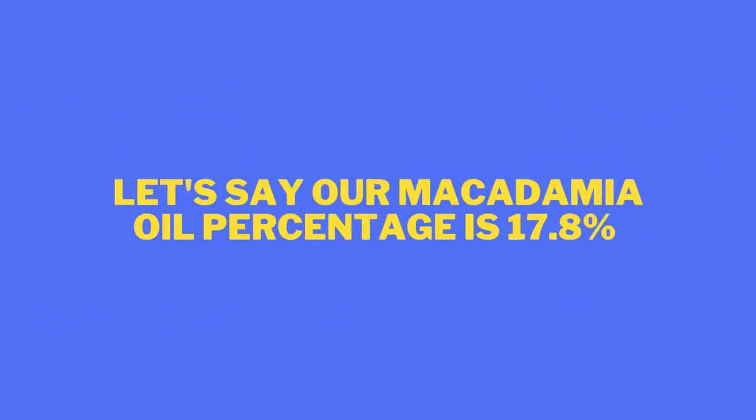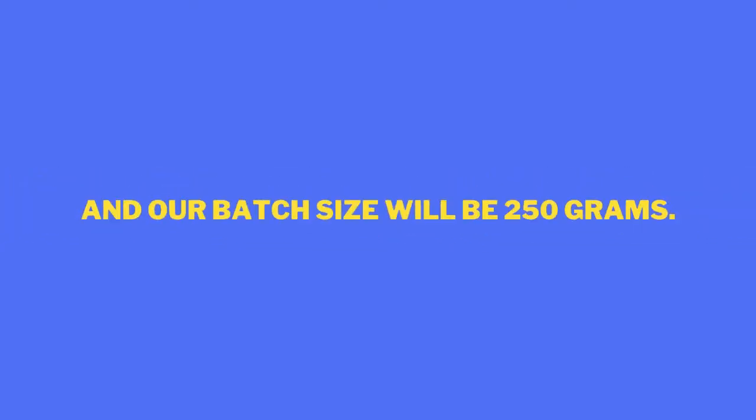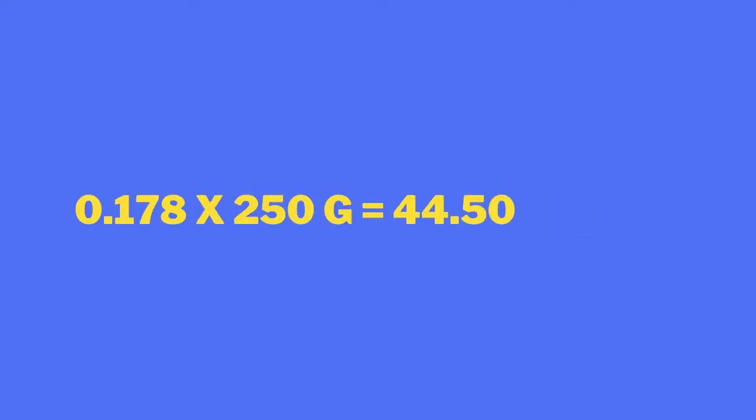To convert percent to grams: take the percentage of your ingredient, divide it by 100, then multiply by your batch size. For example, macadamia oil is 17.8% and our batch size is 250 grams. Take 17.8 ÷ 100 × 250 grams, and it equals 44.50 grams.